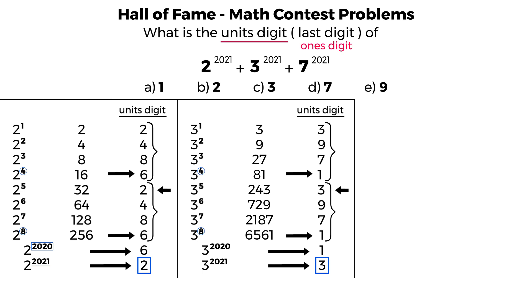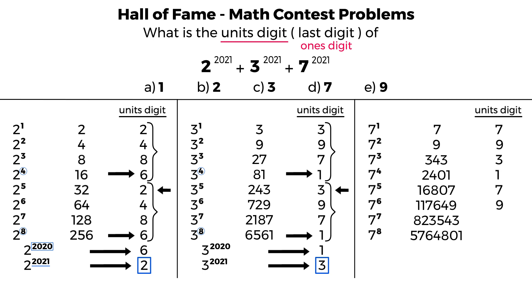And now we get to our final one, 7 to the power of 2021. So we have 7 to the power of 1 all the way down to 7 to the power of 8. And now let's fill in what these numbers are. And therefore, the units digit will be 7, 9, 3, 1, 7, 9, 3, 1. And again, we have a pattern.